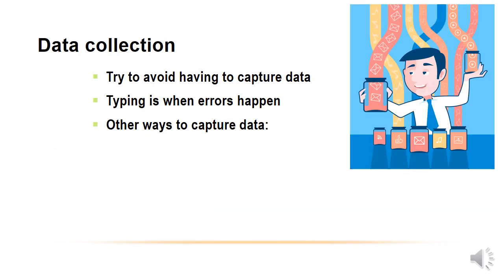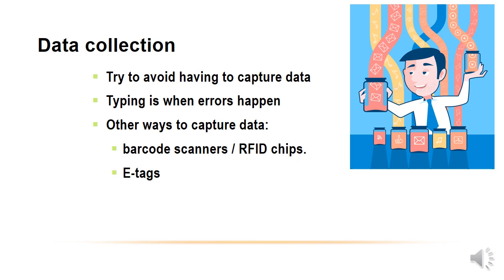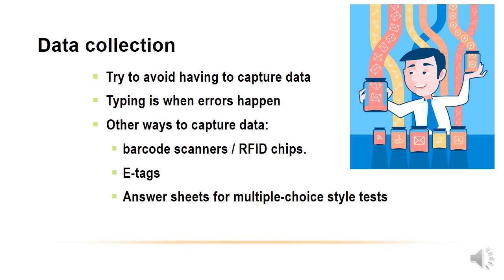With data collection, we try to avoid having a person sit there and type in the data, because that's when errors happen. There are other ways to capture data: barcode scanners, RFID chips, e-tags, answer sheets for multiple choice-style tests, and robots in factories which use sensors to input data.